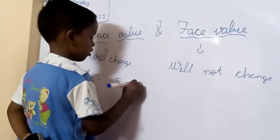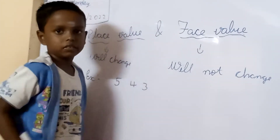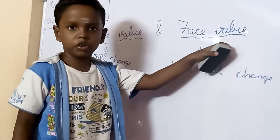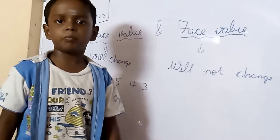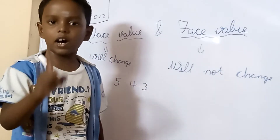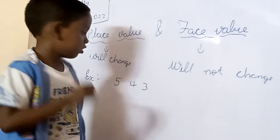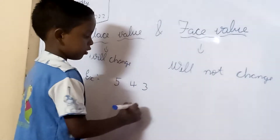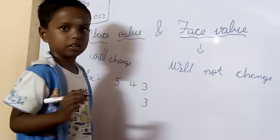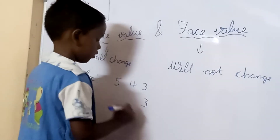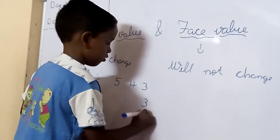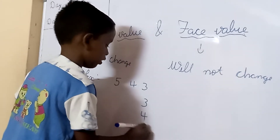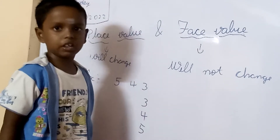5, 4, 3. In face value, you should multiply with 1. So, 3 only. Now 4 — 4 only. And 5 — 5 only.